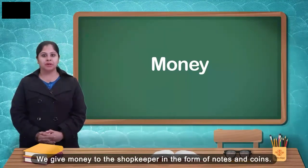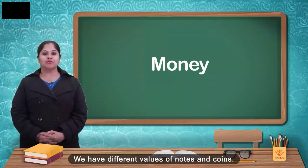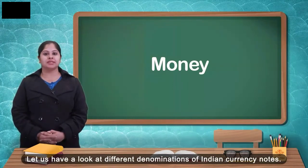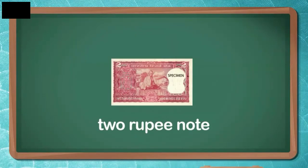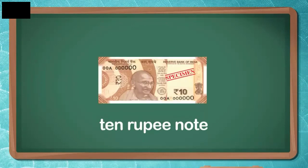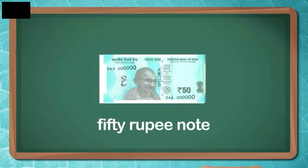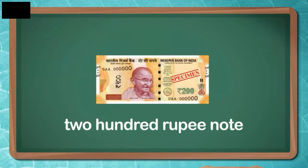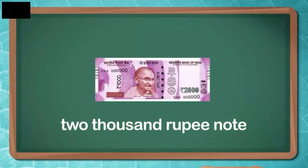We give money to the shopkeeper in the form of notes and coins. We have different values of notes and coins. Let us have a look at different denominations of Indian currency notes: 1 rupee note, 2 rupee note, 5 rupee note, 10 rupee note, 20 rupee note, 50 rupee note, 100 rupee note, 200 rupee note, 500 rupee note, 2000 rupee note.